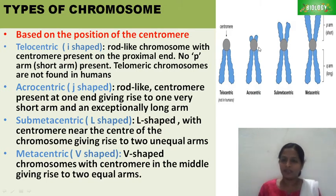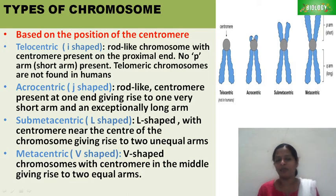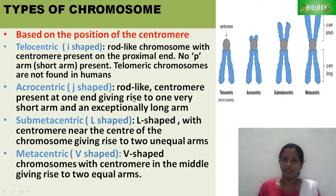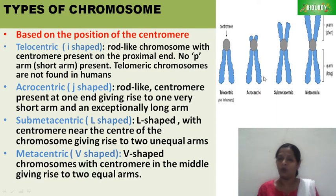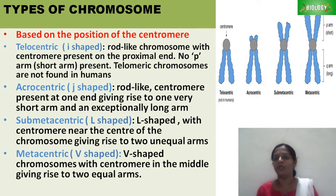Acrocentric — the centromere is near to the proximal end. When the centromere is near to the proximal end, it is called acrocentric. It is a rod-like chromosome with the centromere at one end, giving rise to one very short arm and one exceptionally long arm.